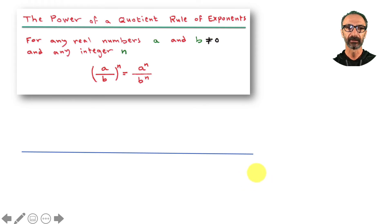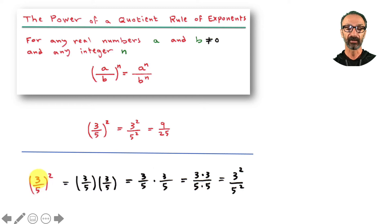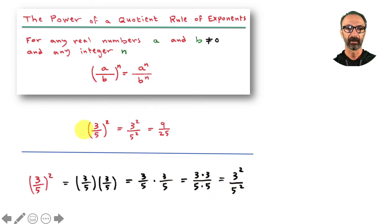The power of a quotient rule is similar: instead of a times b, it's a over b. The exponent distributes to both numerator and denominator. Example: three over five to the power two becomes three squared over five squared, which is nine over 25. To support: three-fifths to the second means multiply three-fifths by itself — multiply across: three times three on top, five times five on the bottom — that's nine over 25, which agrees with the rule.